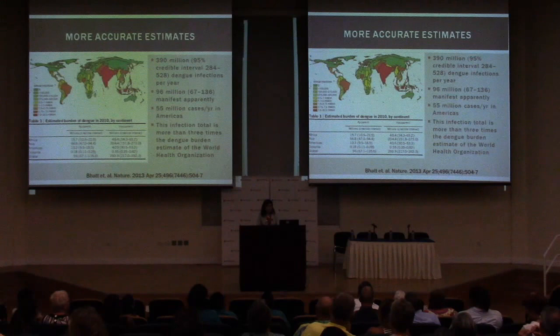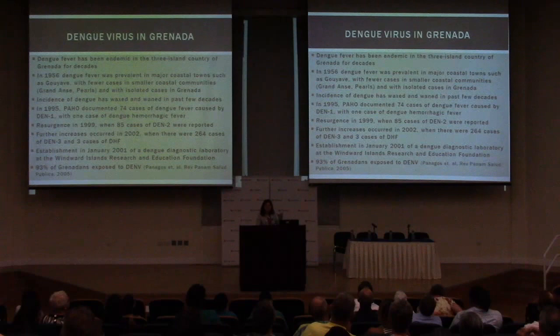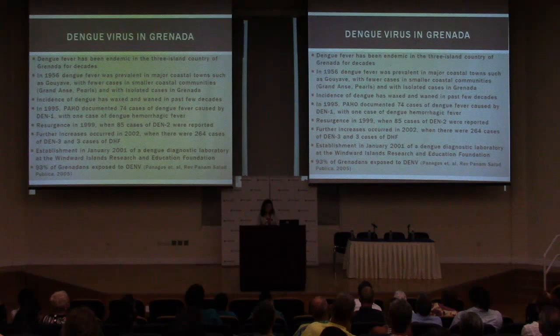Overall there are about 55 million cases per year in the Americas, and Grenada is no stranger to dengue. Dengue virus is endemic here — in the 1950s it was prevalent in major coastal towns. In 1995 there was a dengue outbreak when dengue serotype 1 was introduced, with one case of hemorrhagic fever. Then in 1999 dengue serotype 3 arrived, causing over 300 documented cases and three cases of hemorrhagic fever.